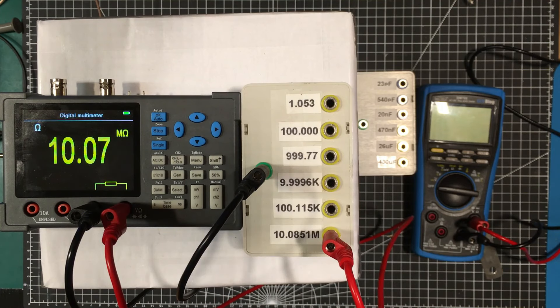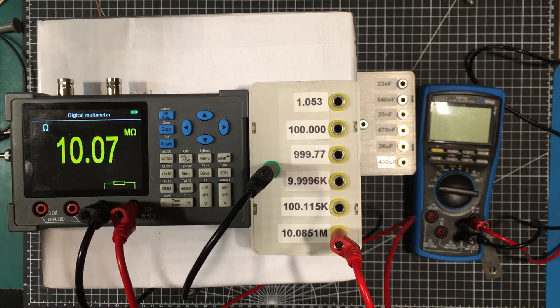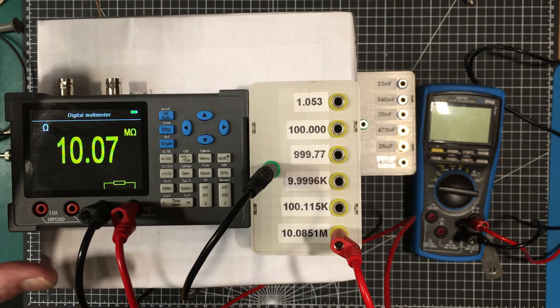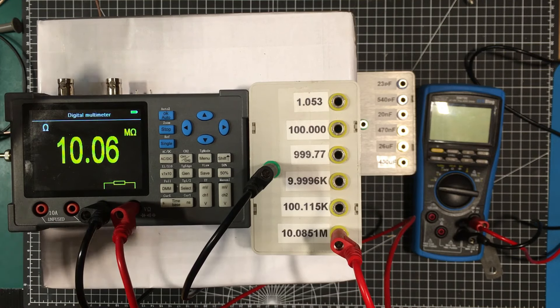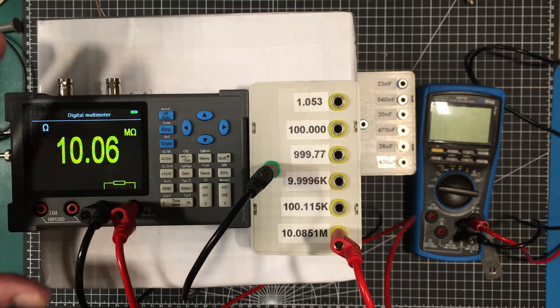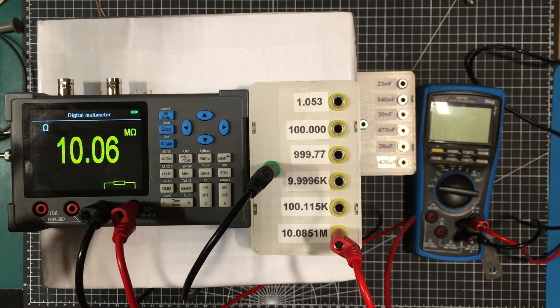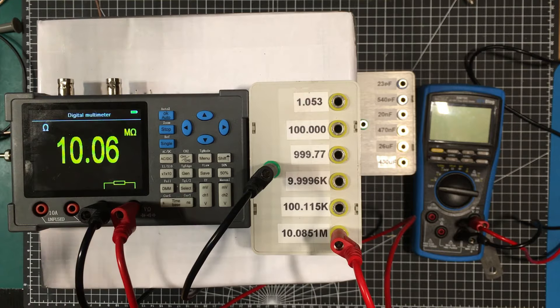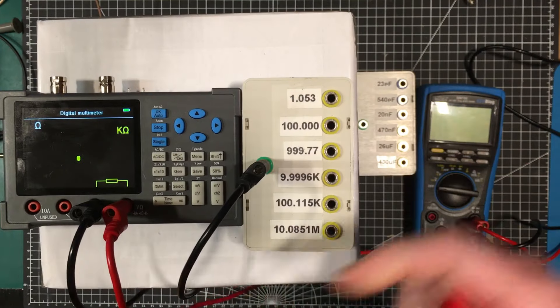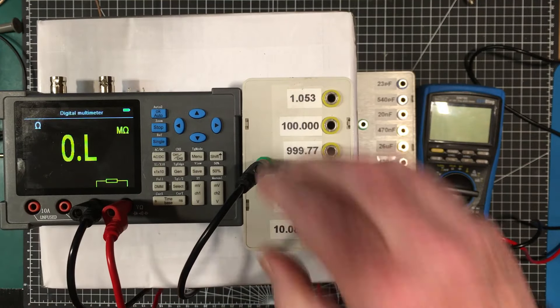For basically a free meter, let's say it's a $9 meter because there is a version of this scope, I think it's called the DSO 2512. There's a few minor differences, but it doesn't have the multimeter. And I think it's about $9 less expensive than this. Yeah, it's good. It's accurate on the ohm scale.